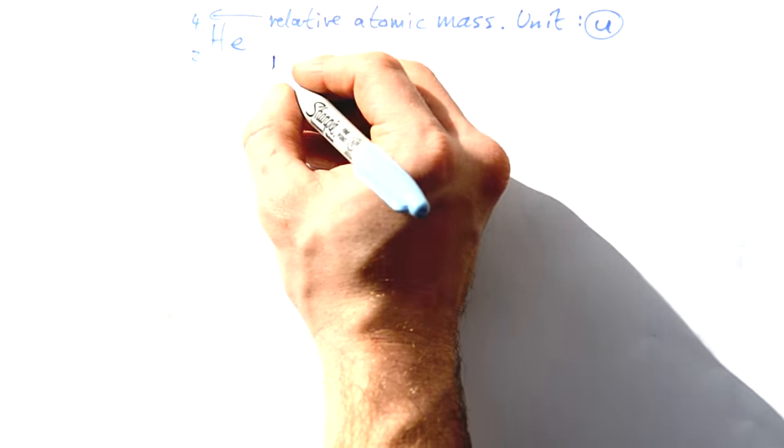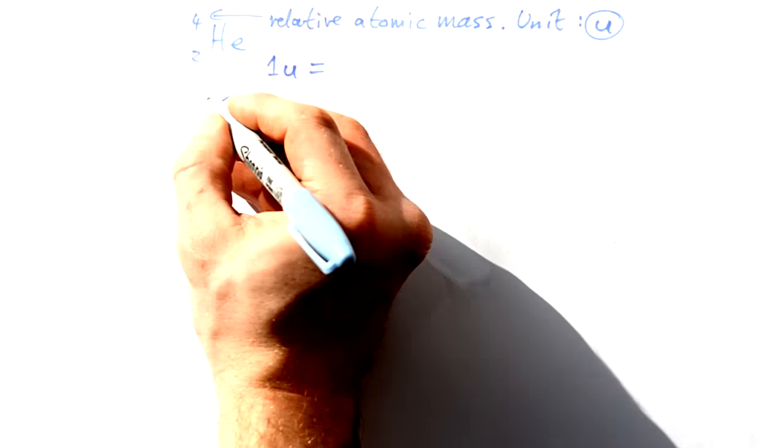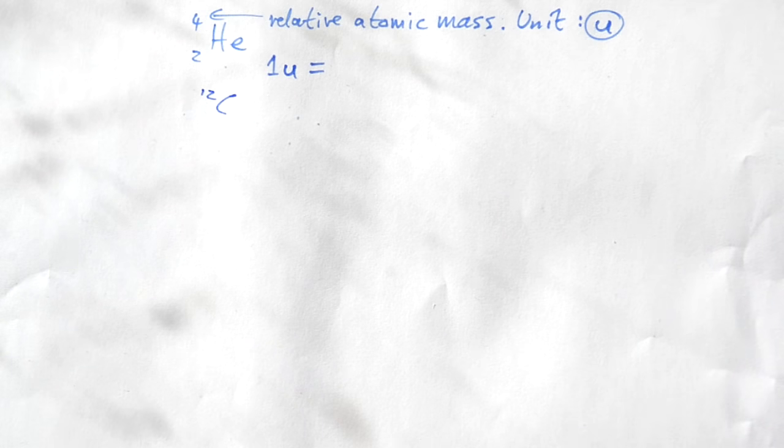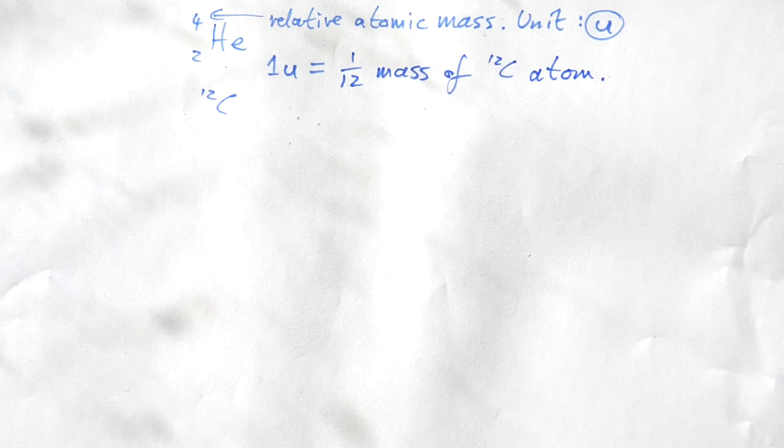Now what is 1U equal to? Well relative atomic mass is actually based off carbon, specifically carbon-12. Now carbon-12 we know has six protons and six neutrons in it so it has 12 nucleons. So what we say is well one of these has to be 1/12th the mass of a carbon-12 atom. So if you have an atom of carbon-12 that's protons, neutrons and electrons then 1U, that's relative atomic mass units, is going to be 1/12th the mass of that.